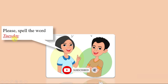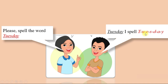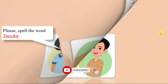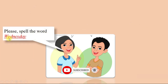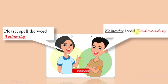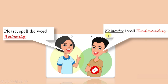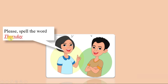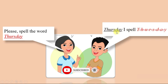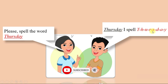Please spell the word Tuesday. Wednesday — I spell W-E-D-N-E-S-D-A-Y. Thursday — I spell T-A-U-R-S-D-A-Y.